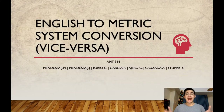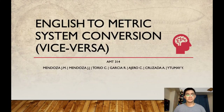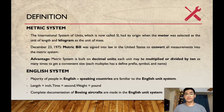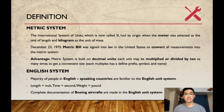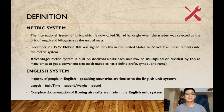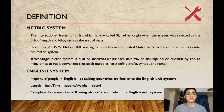Good day everyone! I am Roman, and I am going to discuss the topic about English to metric system. To start off, let us define what the metric and English systems are all about. The international system of units, now called SI, had its origin when the meter was selected as the unit of length and kilogram as the unit of mass. On December 23, 1975, a metric bill was signed into law in the United States to convert all measurements into the metric system. The metric system is widely used nowadays and commonly represents most measurements.